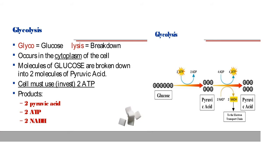In glycolysis, 2 ATP molecules are consumed to convert one glucose molecule to pyruvic acid. The products of glycolysis are: 2 pyruvic acid molecules are formed, 2 ATP molecules are released (net gain), and 2 NADH molecules are formed. NAD accepts electrons and protons from the substrate and is reduced to NADH.